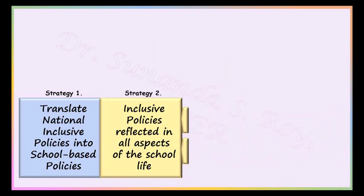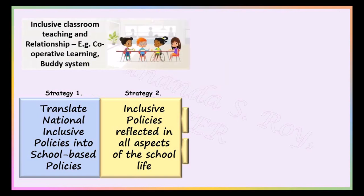The second strategy is to ensure that inclusive policies are reflected in all aspects of life. Schools should follow inclusive classroom teaching relationships between teachers and students. Teachers should follow teaching techniques that include all kinds of learners. Strategies that encourage group work and student interaction should be conducted in school, for example using cooperative learning or buddy system teaching strategies. Teaching aids are to be provided to the differently abled students in the same classroom so that there is no segregation.